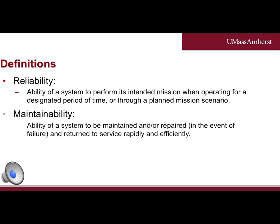Reliability is the ability of a system to perform its intended mission when operating for a designated period of time or through a planned mission scenario. This essentially means that a system is designed to conform to a set standard for a given period of time. For instance, a reliable smartphone is designed to perform correctly for say two years, which is the standard contract for smartphones.